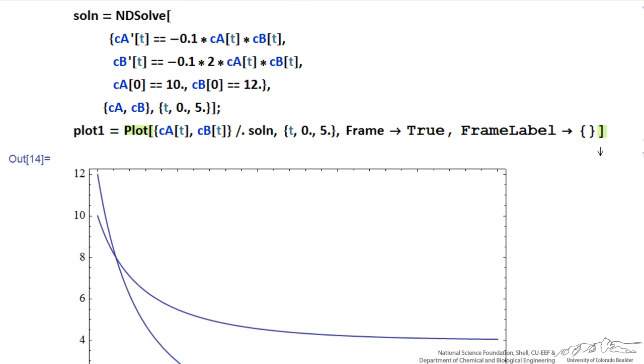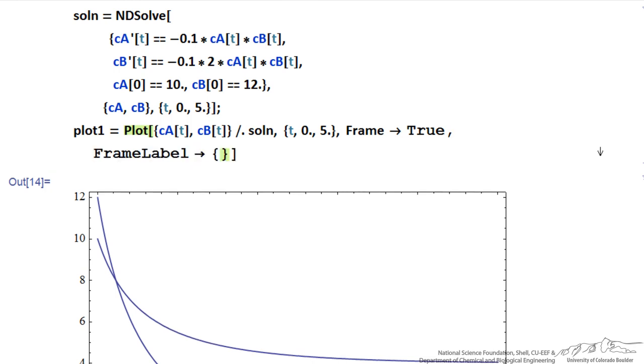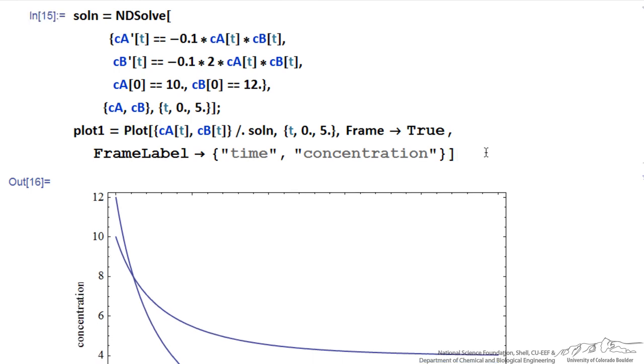First I'm going to put this on a new line to make it easier to see, so enter. So it's x-axis first, and then y-axis. The x-axis is time, and the y-axis is concentration. So now, shift enter, you notice on the plot, I have concentration label on the y-axis and time label on the x-axis.